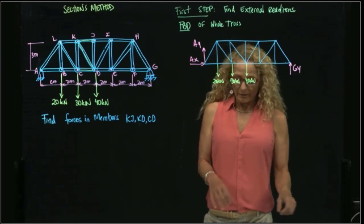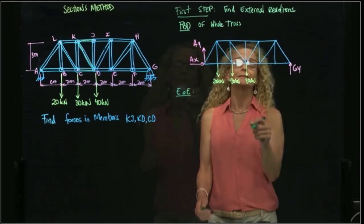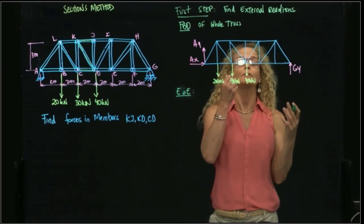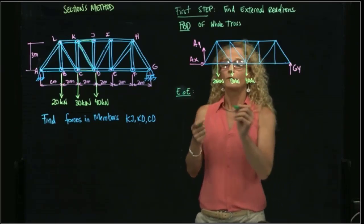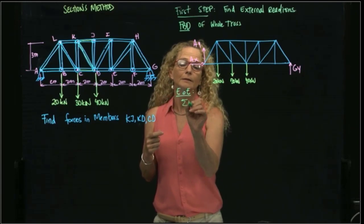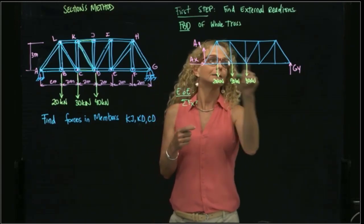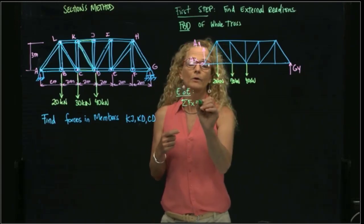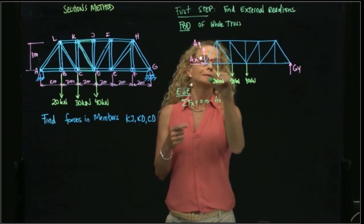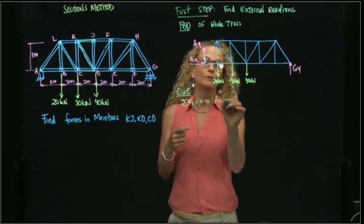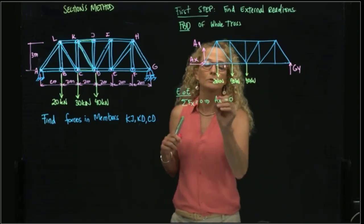I will apply the equations of equilibrium. Since it is a rigid body, I have three equations of equilibrium. My first equation is summing forces in X. I don't have many forces in X — only AX. Since there is no other horizontal force, AX is equal to zero.